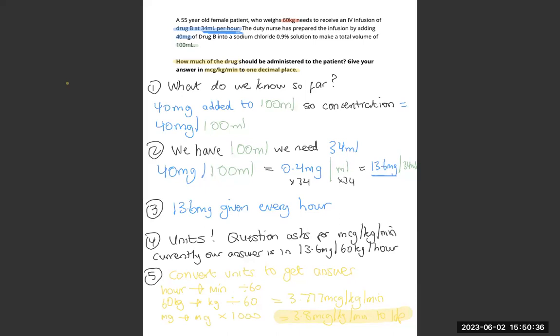You've got 13.6 becomes 3.777 recurring. However, the question asks for one decimal place. So our answer is 3.8. This is correct because our units match what the GPS is asking for. And our answer is to one decimal place as well.